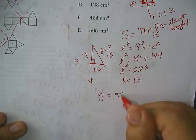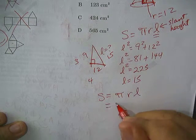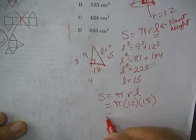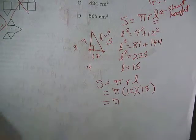The formula is S equals pi r L. The radius we know is 12. 15. 12 times 15 is 180, I believe.